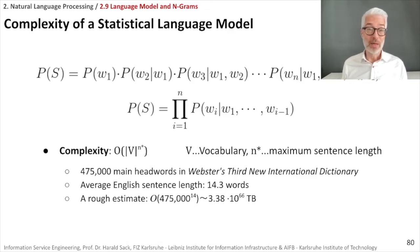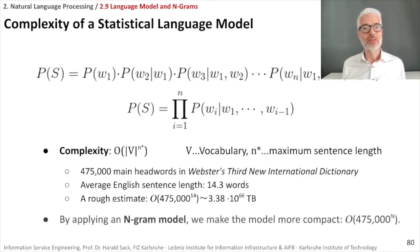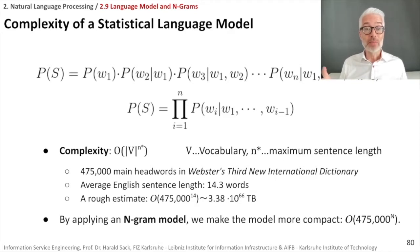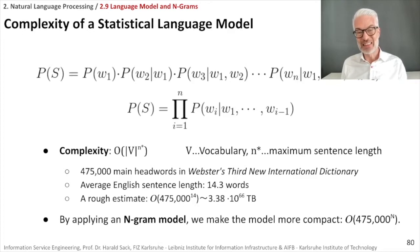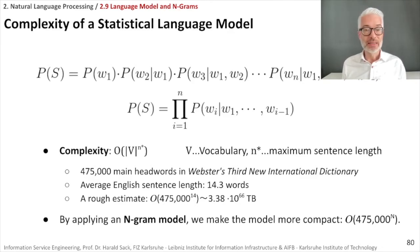We have to deal with a smaller n, and this is where n-grams come into play. By applying an n-gram model, we make the model much more compact — we take the vocabulary size of 475,000 words to the power of n for the n-gram we are using: unigrams, bigrams, trigrams, and so on. This makes the language model much more manageable.